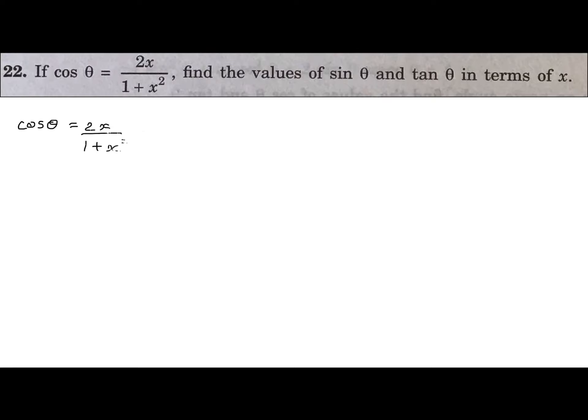Next question: if cos θ = 2x/(1 + x²), find the values of sin θ and tan θ in terms of x. So cos θ is given as 2x upon (1 + x²), which is the ratio of adjacent side upon hypotenuse. Let us make a right angle triangle ABC and mark angle C as θ.